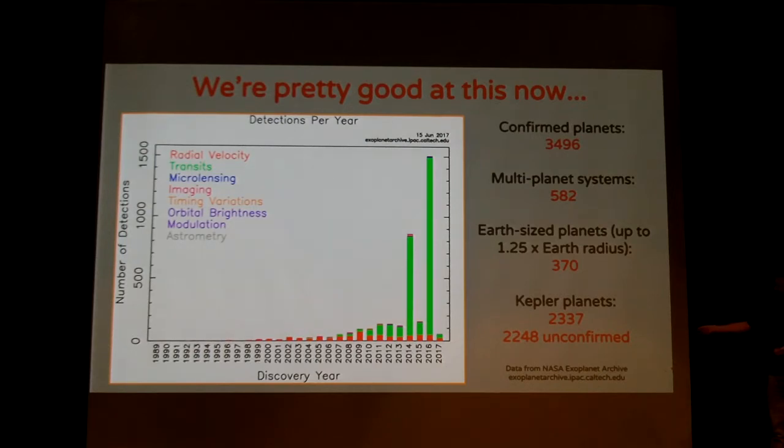But we're actually getting a lot more than that. This was updated just this week, and it's probably out of date already. But we're at nearly 3,500 worlds that we know about now. So you can see along this axis is the year, and this is the number of detections in a single year. So the green bars here are essentially Kepler's work. So you can see it's really effective at finding worlds. And we're getting really good at it. The number of planets I heard at the conference this morning that I was attending, the number of planets we know about doubles every 22 months, roughly.